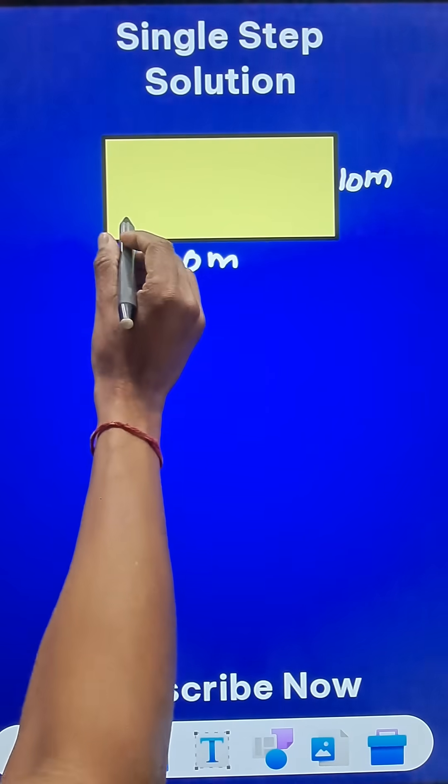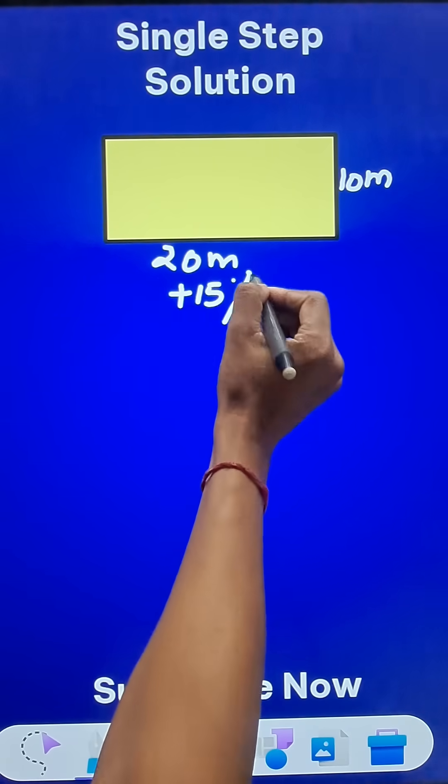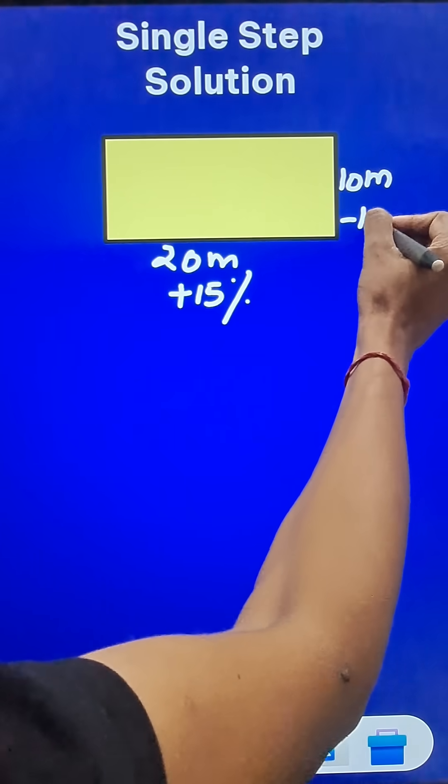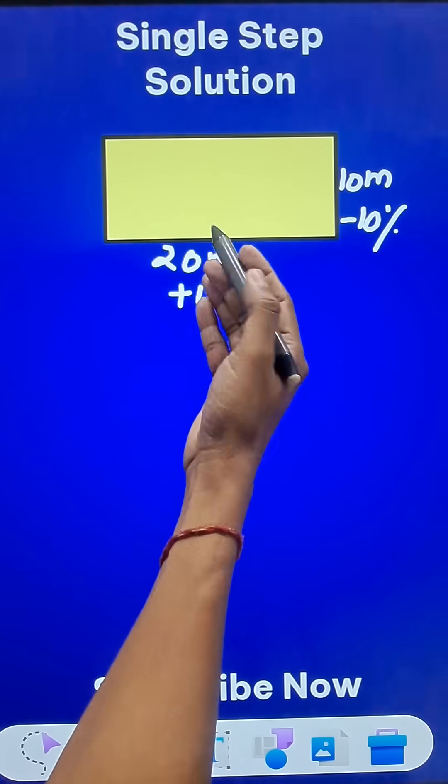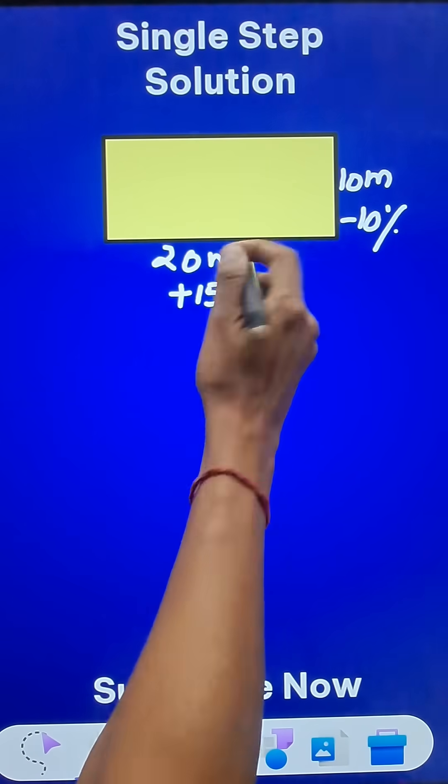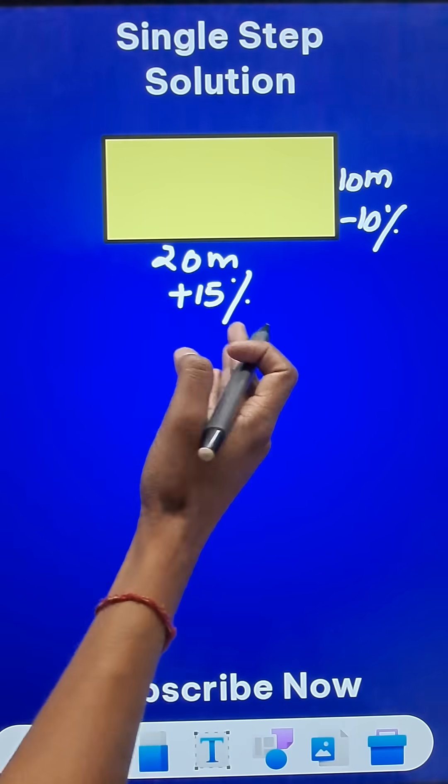And now we are increasing the length by 15% and reducing the width by 10%. So we need to find how much percentage will the area change, whether it is increase or decrease. So what will you be doing traditionally?